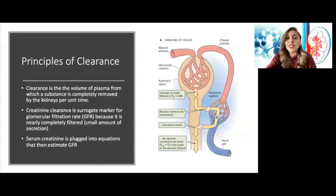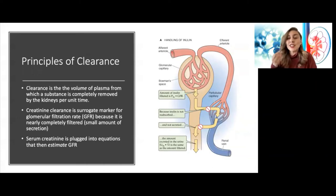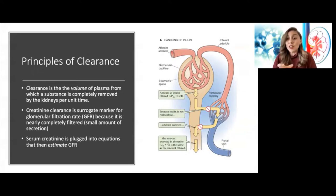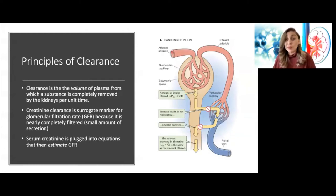This brings us to the principle of clearance. The definition of clearance is the volume of plasma from which a substance is completely removed. We're not talking about how much solute gets removed, but how much volume needs to pass by the kidney to fully remove a substance. Clearance varies from substance to substance. If something is not filtered — like albumin, which is too large to get filtered — then the clearance of albumin is very low.